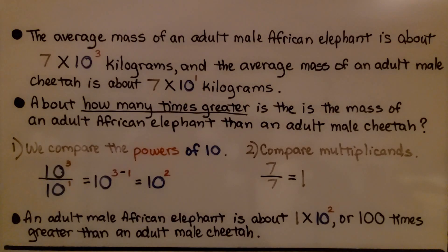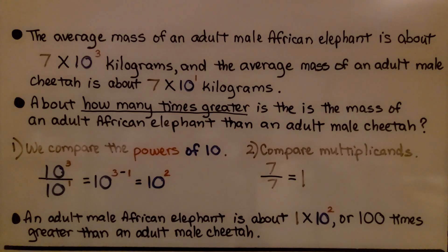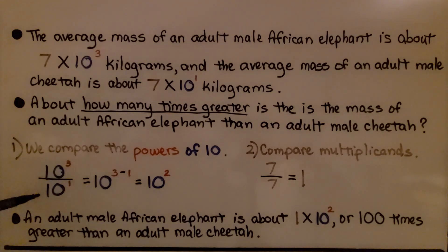The average mass of an adult male African elephant is about 7 times 10 to the third power kilograms, and the average mass of an adult male cheetah is about 7 times 10 to the first power kilograms. About how many times greater is the mass of an adult African elephant than an adult male cheetah? The first thing we do is compare the powers of 10. We've got 10 raised to the third power and 10 raised to the first power.